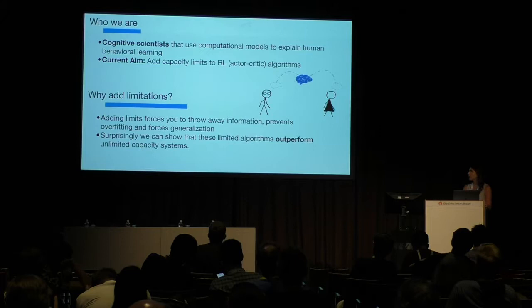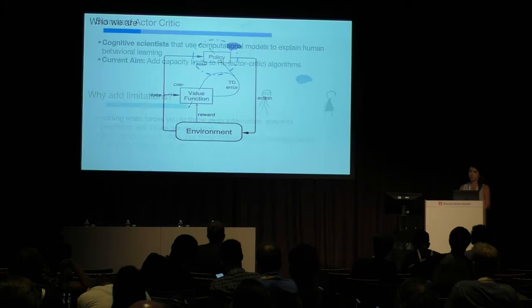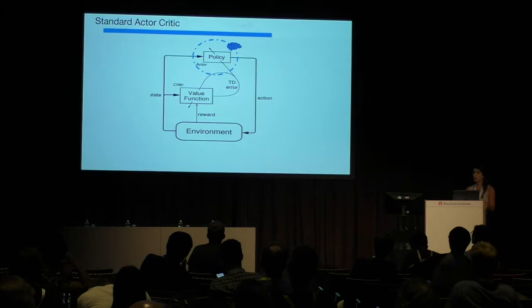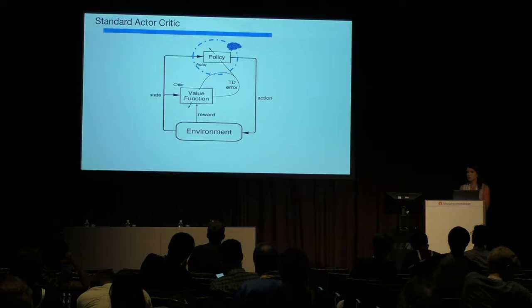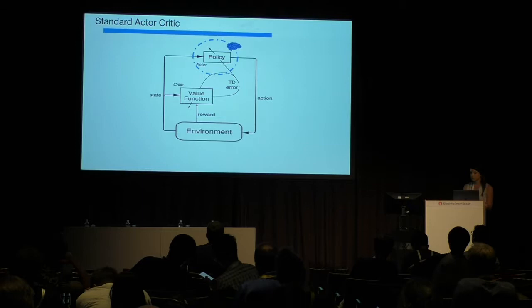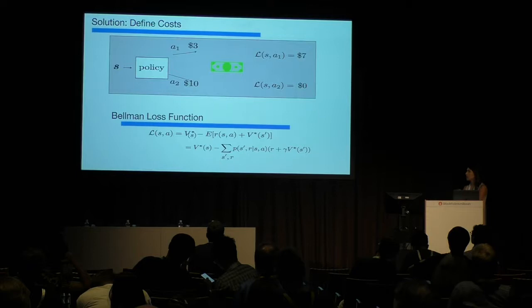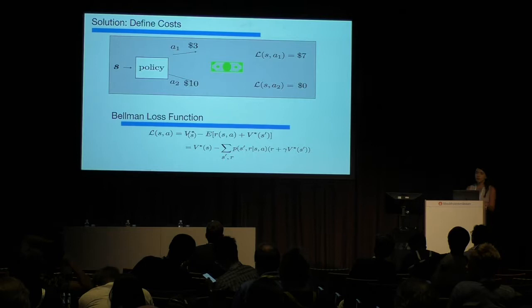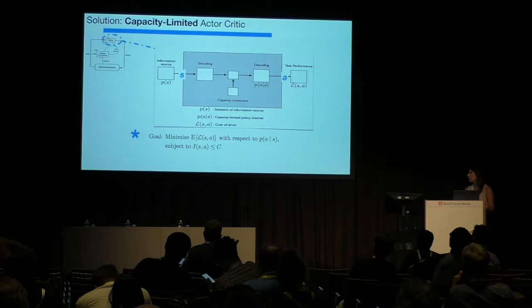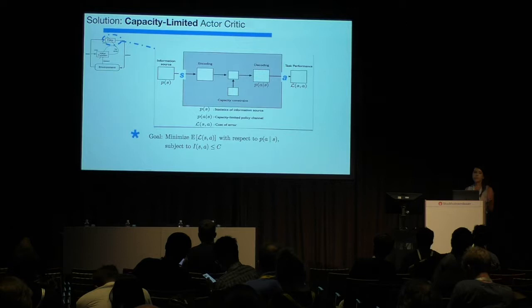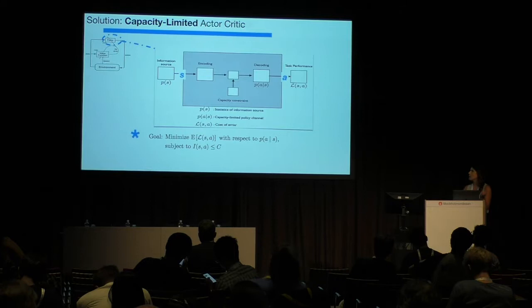For the standard actor-critic algorithm, the goal is to learn an optimal value function, using the TD error to update both the policy and the value function. We consider the state-to-action policy mapping as an information channel in the Shannon sense, placing an additional constraint on information processing. To define an optimal channel, we define the cost for taking an action in a given state as the difference between the optimal value and expected value — formalized as the Bellman loss function. The goal becomes minimizing expected cost subject to an information processing constraint. We call this the capacity-limited actor-critic.